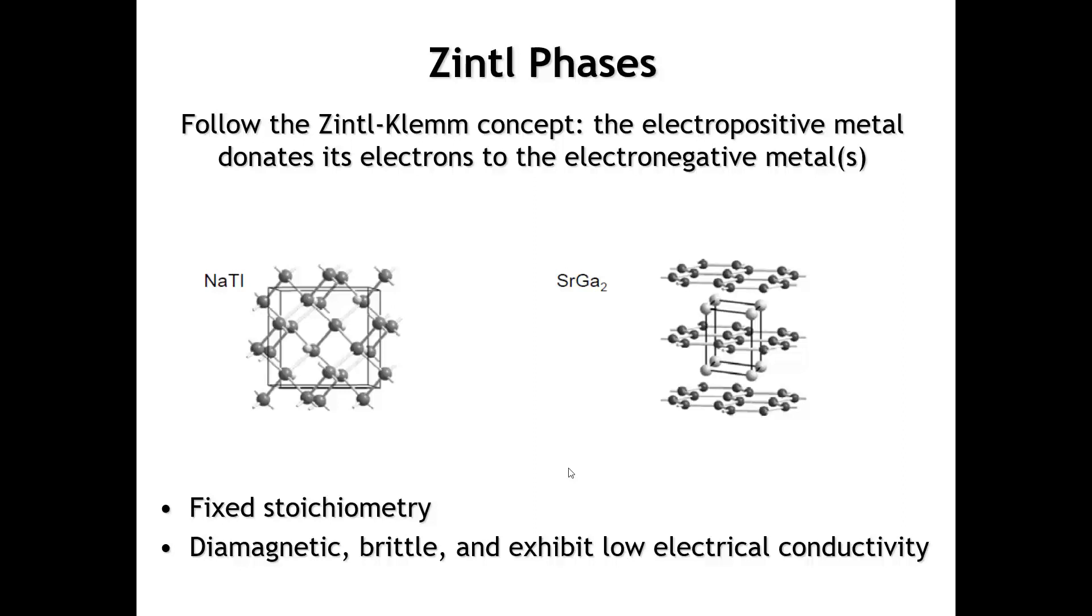And all of those are kind of characteristics we normally would associate with something like a covalent network solid. A phase like sodium-thallium is what we call a Zintl phase, and those phases follow the Zintl concept, where we have an electropositive metal, here's sodium, that donates its electrons to the electronegative metal. So we have ions in the structure, and then the electronegative metal realizes its octet, typically through forming bonds with other of the more electronegative metal species in the structure.